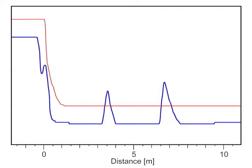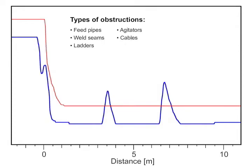We have obstructions in the tank that can interfere with the material echo. These obstructions can be feed pipes, weld seams, ladders, agitators, cables, support structures, or anything that can impede the transmitted pulse.